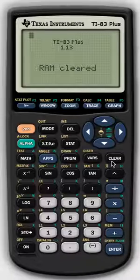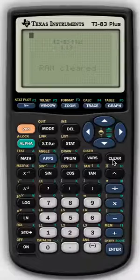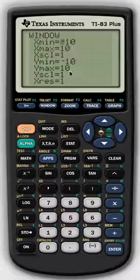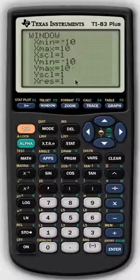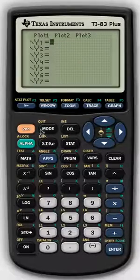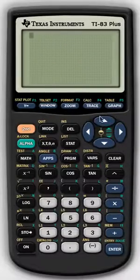And everything will kind of go back to its normal settings, which is kind of nice. So if you were to go into y equals, you'll know nothing is there. Your window is back to the standard window that it normally is. Nothing's too funky.